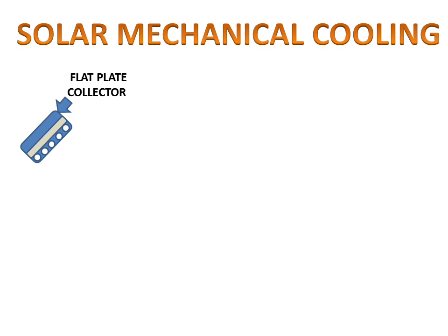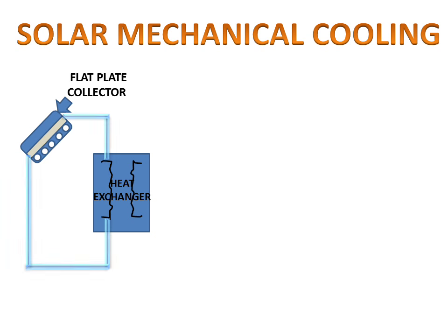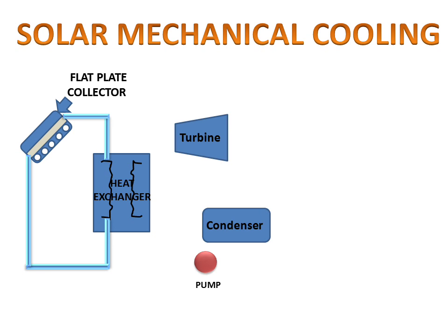We will have a flat plate collector and a heat exchanger. The flat plate collector is connected with the heat exchanger with the help of pipes. The heat exchanger is connected with the turbine, condenser, and pump with the help of pipes. This is the second cycle, and this is the first cycle.